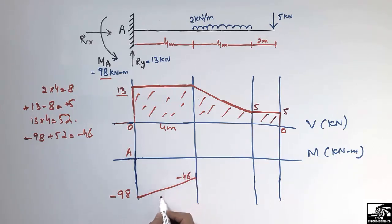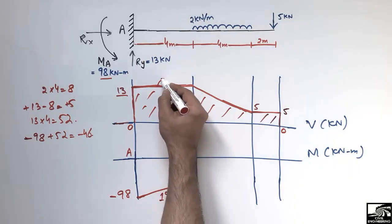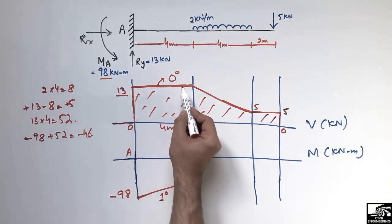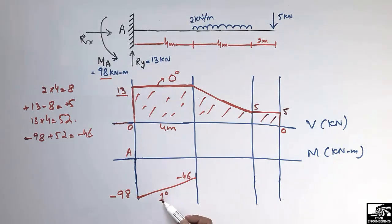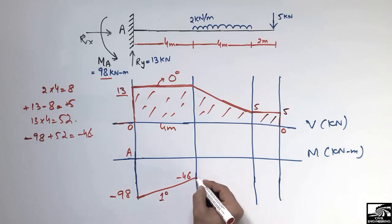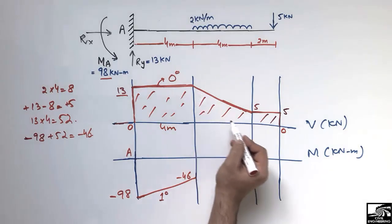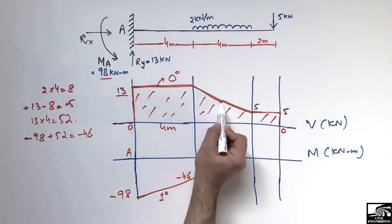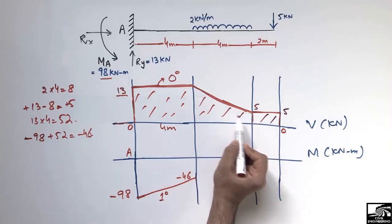The next section has a trapezoid shape. Because the shear force varies from 13 to 5 over this region, the shear force line is a straight inclined line, so the bending moment will be a first-degree curve — one degree higher than the shear force. We already have minus 46 kN·m here.